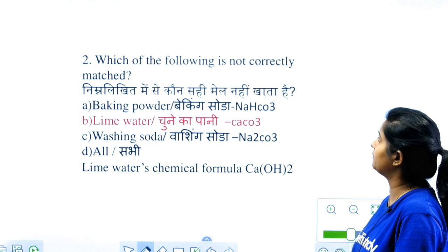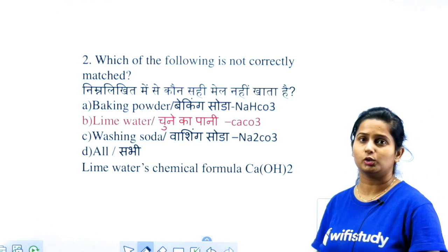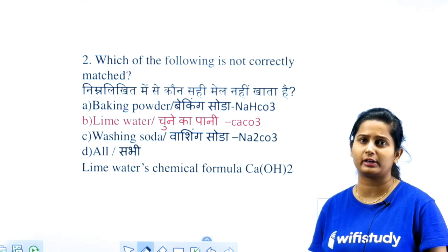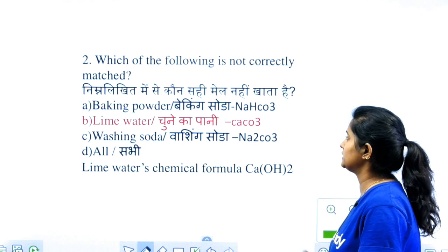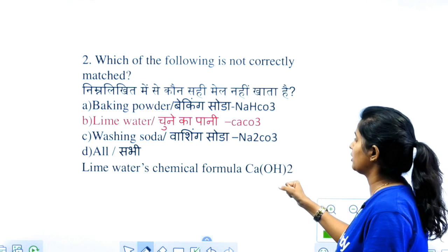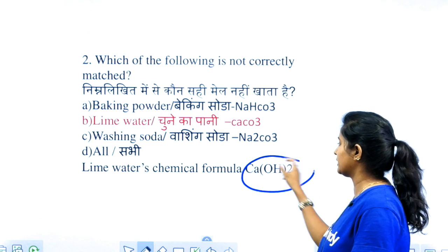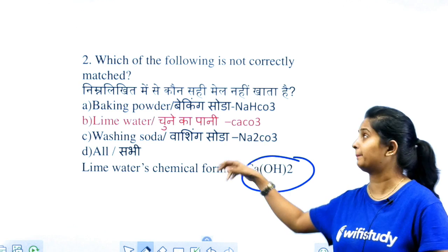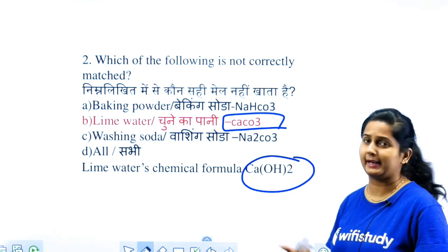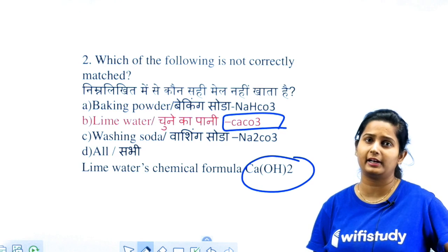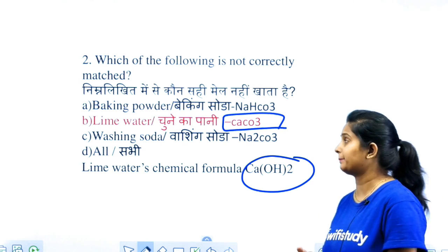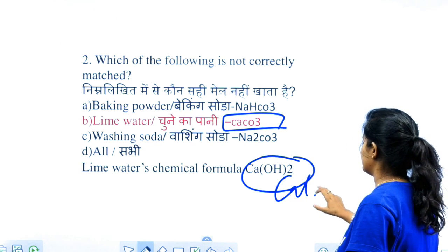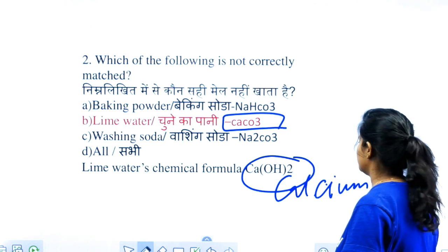Look, a question you have asked: which one of the following is not correctly matched? You were given formulas. CaCO3, baking powder, washing soda, etc. You have to find the chemical formula of lime water. It is Ca(OH)2. Calcium carbonate formula is written separately. Baking soda is NaHCO3. Washing soda is Na2CO3. So the correct answer here is calcium hydroxide.